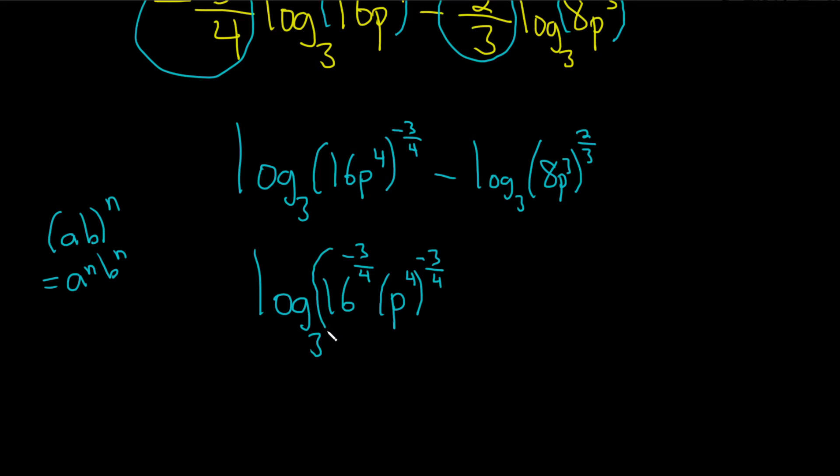And then this is in parentheses, minus log base 3 of 8 to the two-thirds, and then this would be p cubed to the two-thirds. The step I wanted to skip was, you can just multiply these numbers here. And then same thing here, you can multiply these numbers here.